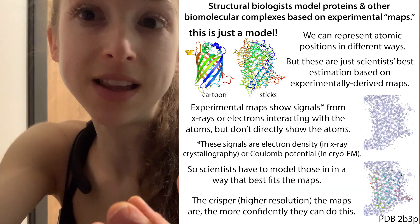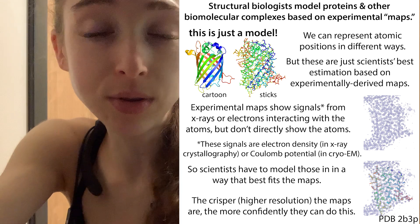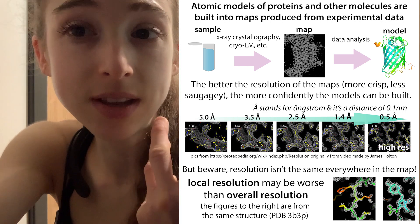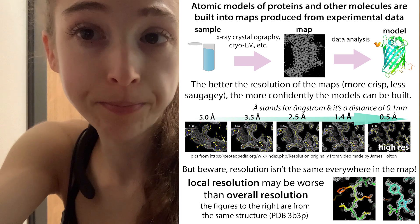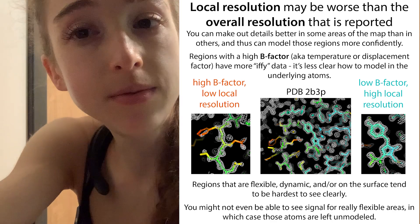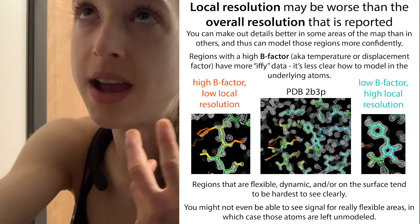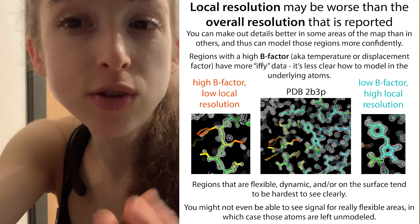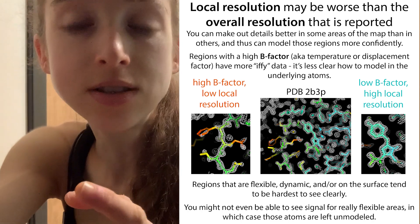At 1.5 angstroms we're talking about atomic resolution, but you can't just directly read off atoms from the map — structural biologists actually have to build the model into it. They also have to contend with the fact that the reported resolution is typically the overall resolution, but flexible regions of a protein may have lower local resolution. So when reading a paper, you should ask: is the resolution at the specific site you care about actually strong enough to model accurately? Does the data really support their claims about that exact area?